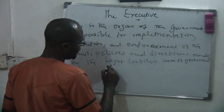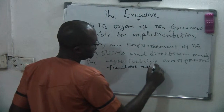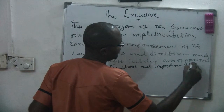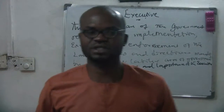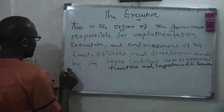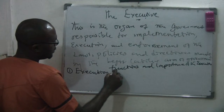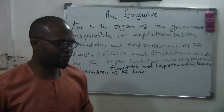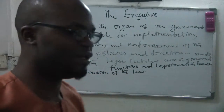Now we are going to look at the functions and importance of the executive arm of government. What are the functions and importance of the executive arm of government? Number one is that they do what? Execution of the laws. That's their number one function — they execute the laws. The executive arm of government executes the laws.